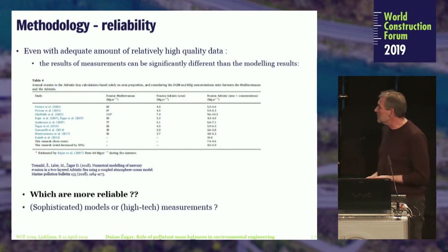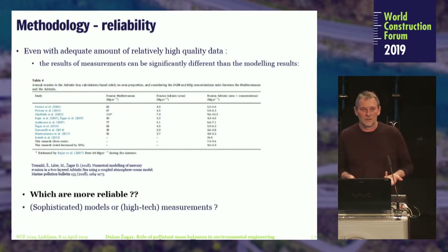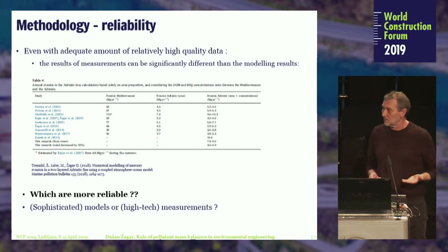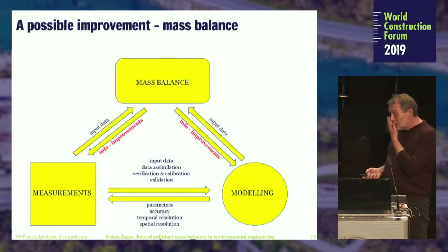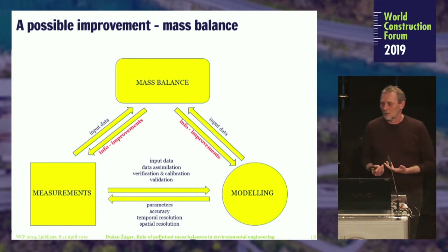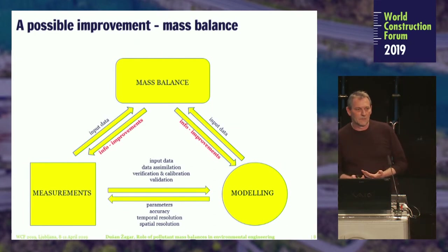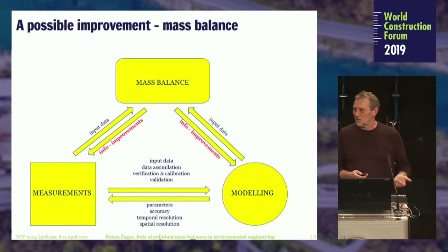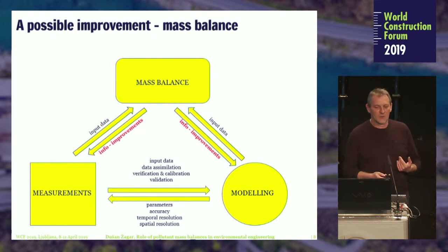So we ask ourselves: which are finally more reliable — the sophisticated models we are using or the high-tech measurements? What is better? We can introduce the mass balance. It is not only measurements and modeling we are dealing with, but we can do the mass balance, which we feed with all the data from both models and measurements. Then we get the feedback and can do some improvements in this way.